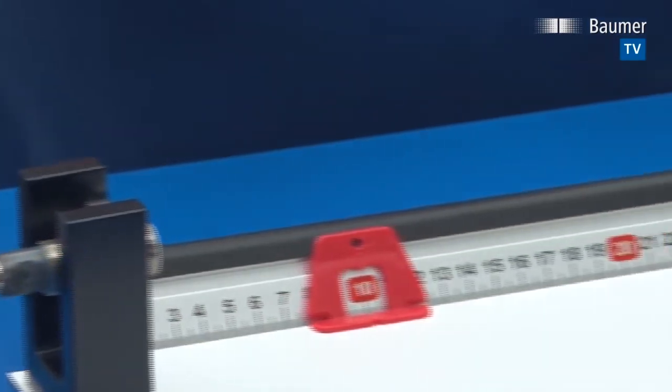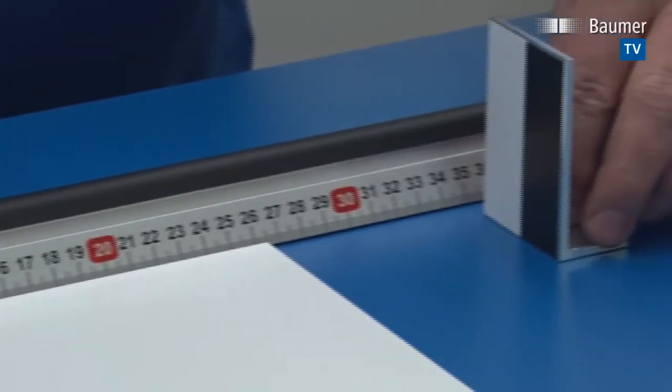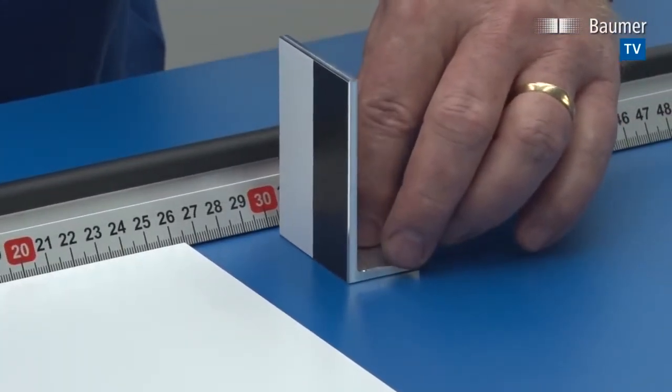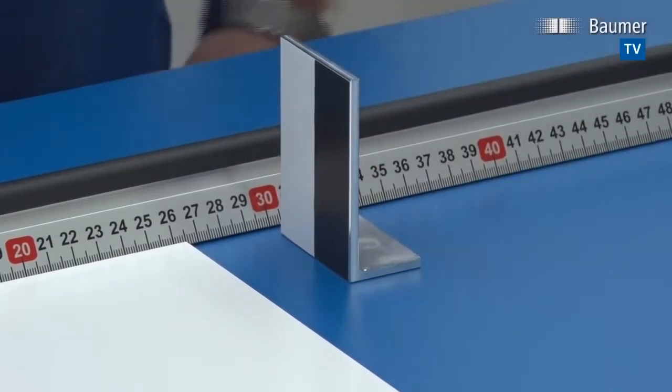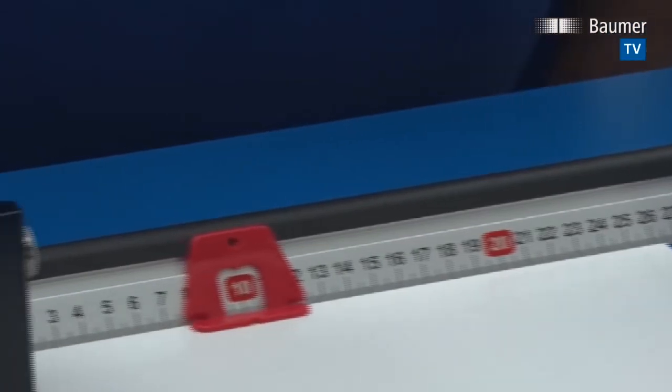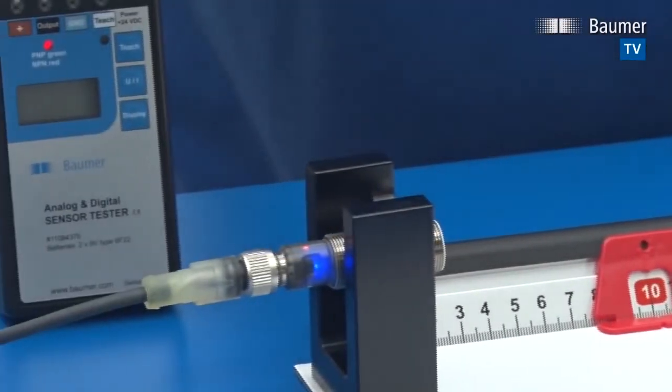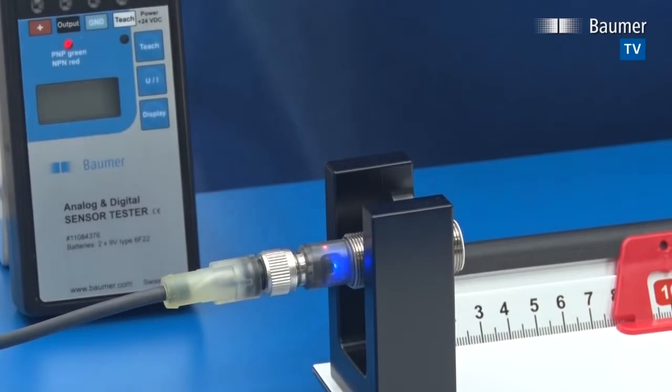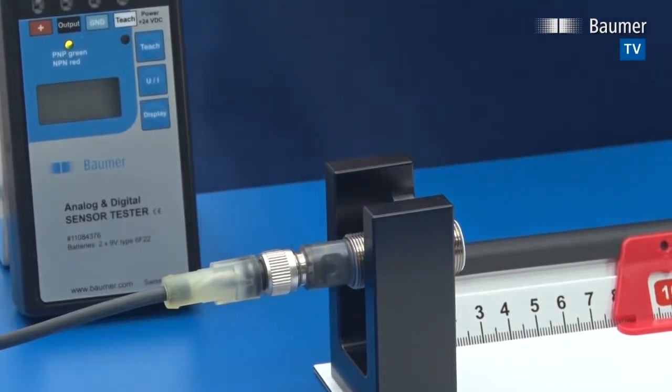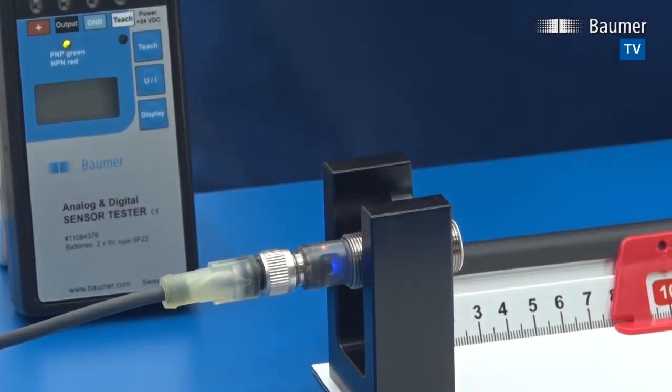We want to teach the sensor to see this object at 30 centimeters distance. So we have to position the object to that distance required. Then again by using the tool we confirm that distance to the sensor. The sensor will continue to flash and quickly switch off and then default into running mode.